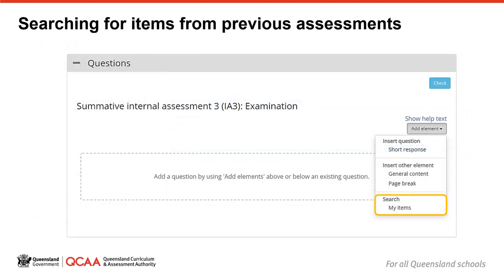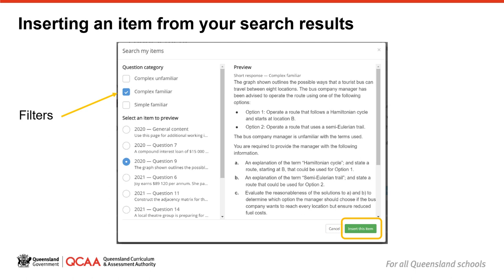Short and combination examinations have a new option in the Add Elements menu, which is a search through My Items. Selecting this option will let you search through items from your previously endorsed assessment instruments and approved comparable assessment instruments for this technique and unit of work. When you click on Search My Items, you will see filter options for narrowing the item types in your search. For some subjects, there may be no question categories due to the specifications of your syllabus. In this case, the question options are Simple Familiar, Complex Familiar, and Complex Unfamiliar questions.